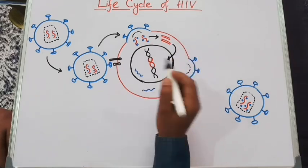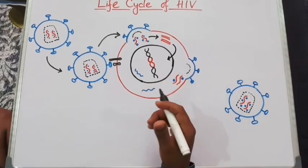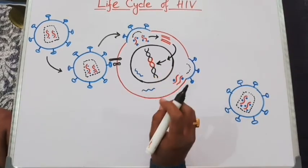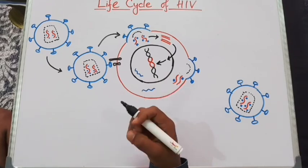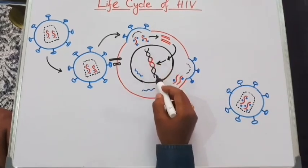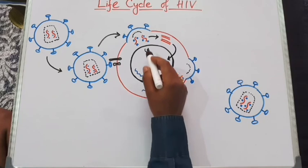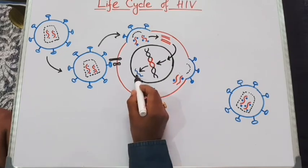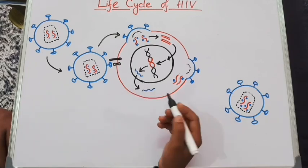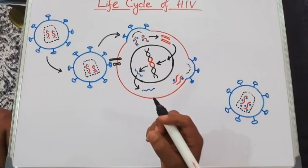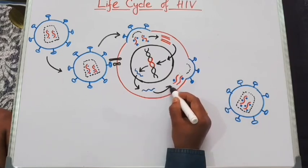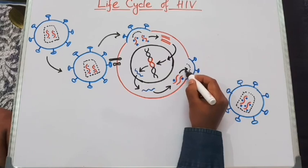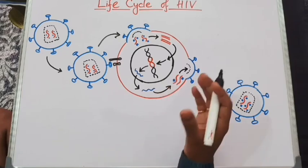Inside the host cell, the single-stranded RNA gets converted into double-stranded DNA by the viral enzyme reverse transcriptase. This double-stranded DNA enters the nucleus of the host cell, and with the viral enzyme integrase, the viral DNA is inserted into the host chromosome. After proper integration, it produces multiple copies during replication of the host chromosome. When the host chromosome is transcribed, it also produces viral copies of mRNA, which travel out to the cytoplasm and produce all required enzymes and proteins to form another fully functional viral body.